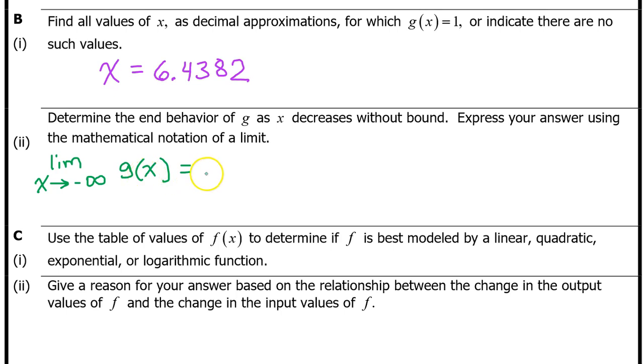To find the value of this limit, we need to consider the graph and ask ourselves what's happening to the value of g as x approaches negative infinity. In other words, as we go to the left, is g increasing without bound, which would be a limit of positive infinity? Is g decreasing without bound, which would be a limit of negative infinity? Or is g approaching some type of an asymptote, maybe leveling out like this? And in that case, whatever this asymptote value would be, that would be the limit. It might be a number like 1 or 0 or 5.